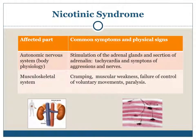Nicotinic syndrome — affected parts and common symptoms: Autonomic nervous system: stimulation of adrenaline glands and secretion of adrenaline, tachycardia, and symptoms of aggression and nervousness. Musculoskeletal system: cramping, muscular weakness, failure of control of voluntary movements, paralysis.